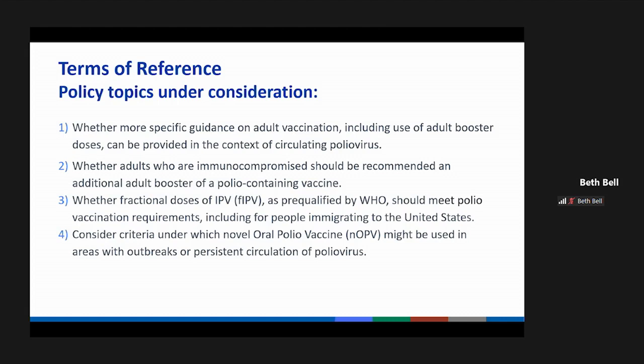Dr. Romero noted that in our global society, people move quickly from regions using oral polio vaccine, potentially introducing virus. He stressed that finding poliovirus in wastewater in another city — such as a travel hub like Chicago — would not necessarily indicate spread from New York, and that genomic sequencing is essential to understanding virus movement. Our surveillance capacity currently outstrips our ability to understand how the virus is traveling, and the public needs to understand this distinction.